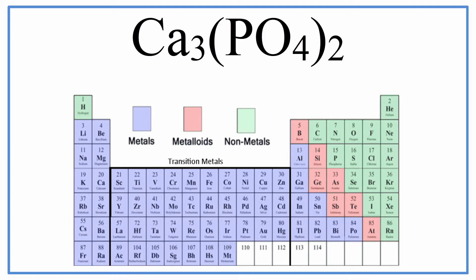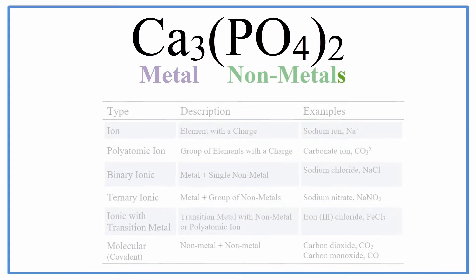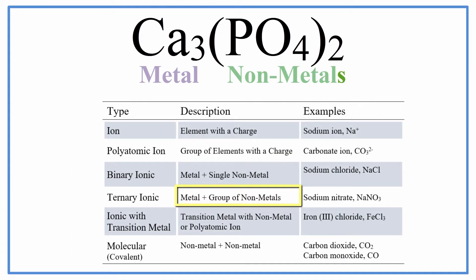We can see calcium is a metal, and the P and the O, phosphorus and oxygen, are non-metals. Because we have a metal and then a group of non-metals, that means we have what's called a ternary ionic compound.